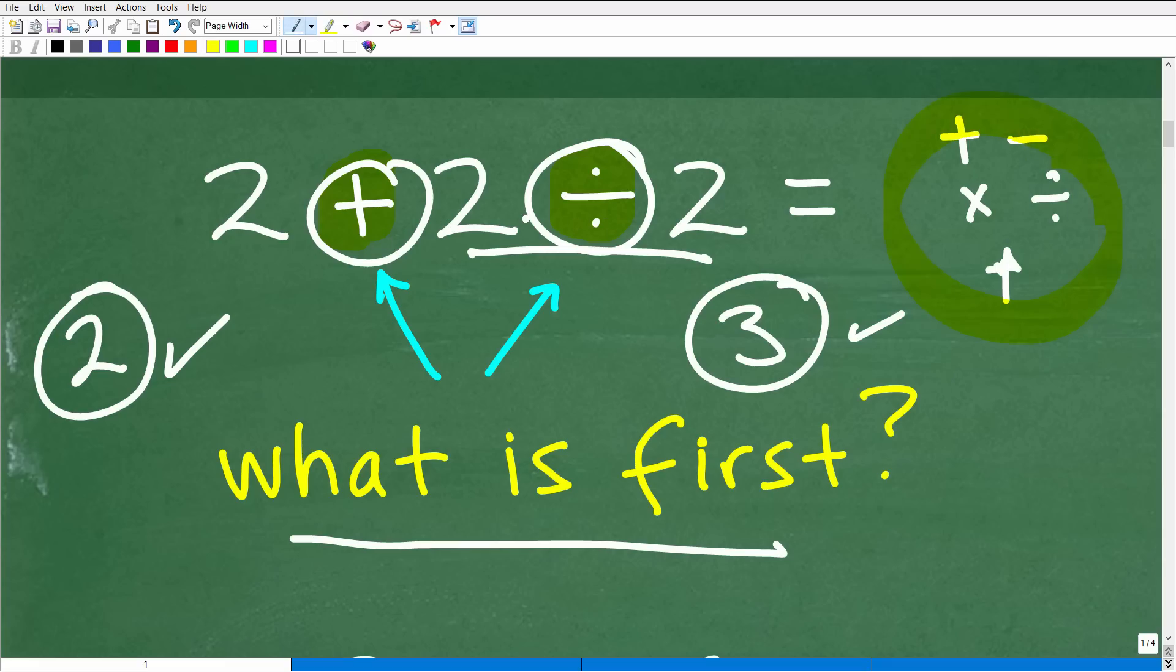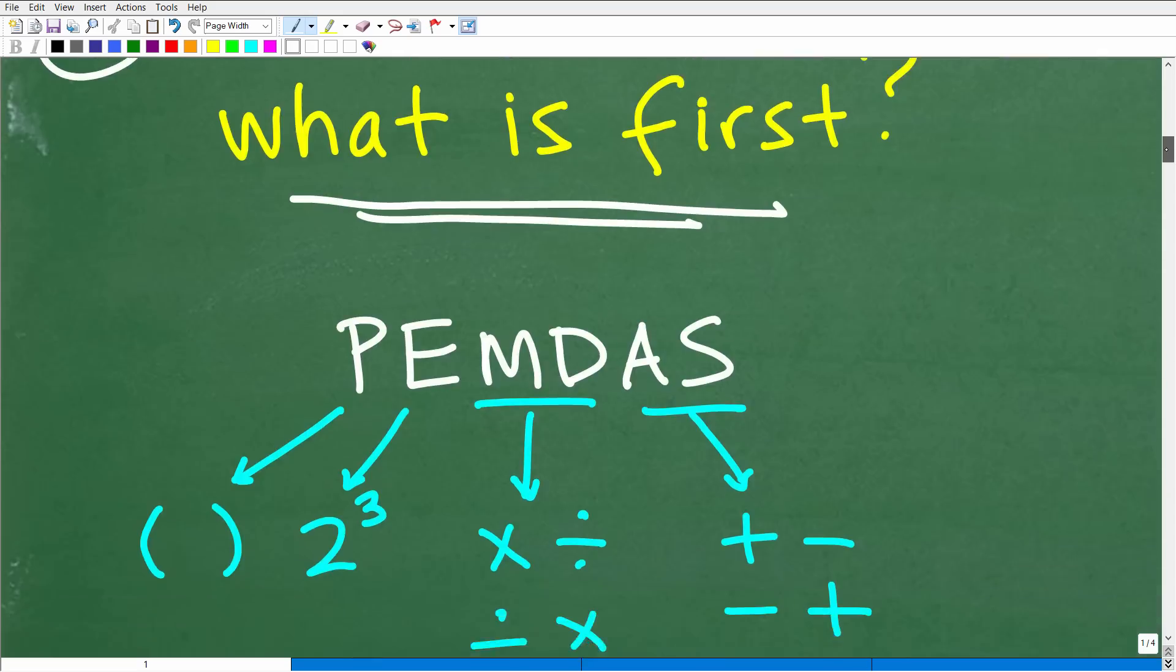Do we do addition first or do we do division first? Does it make a difference? It absolutely does because we come up with different answers. So really the question is, what order of these operations do we do? And this is a really hugely important topic in mathematics. It's called the order of operations. It's basically, when we have a math problem with different mathematical operations involved, what is the order? What do we do first? What do we do second? What do we do third? Et cetera, et cetera. Well, let's go ahead and answer that question right now.